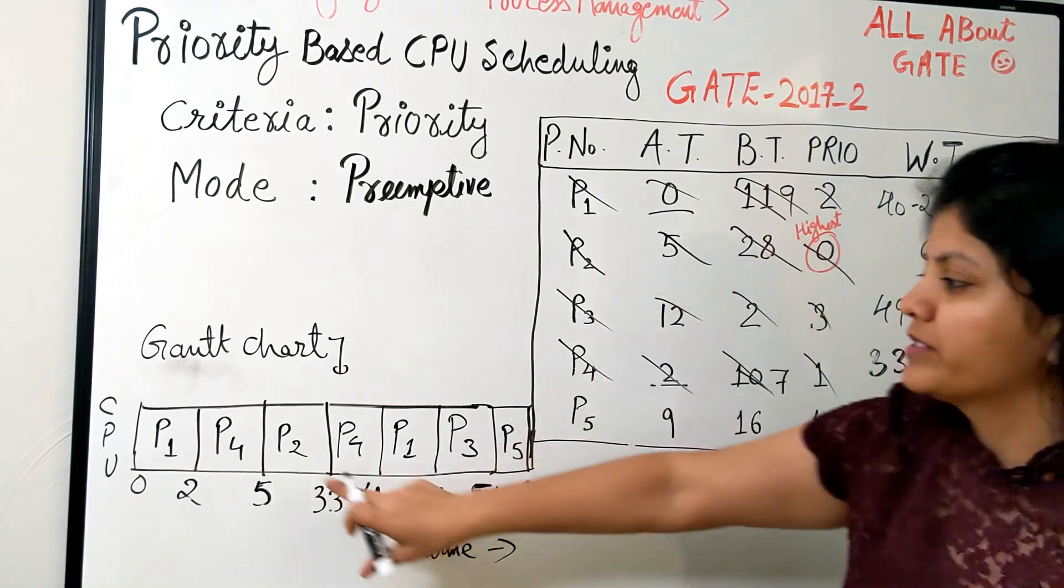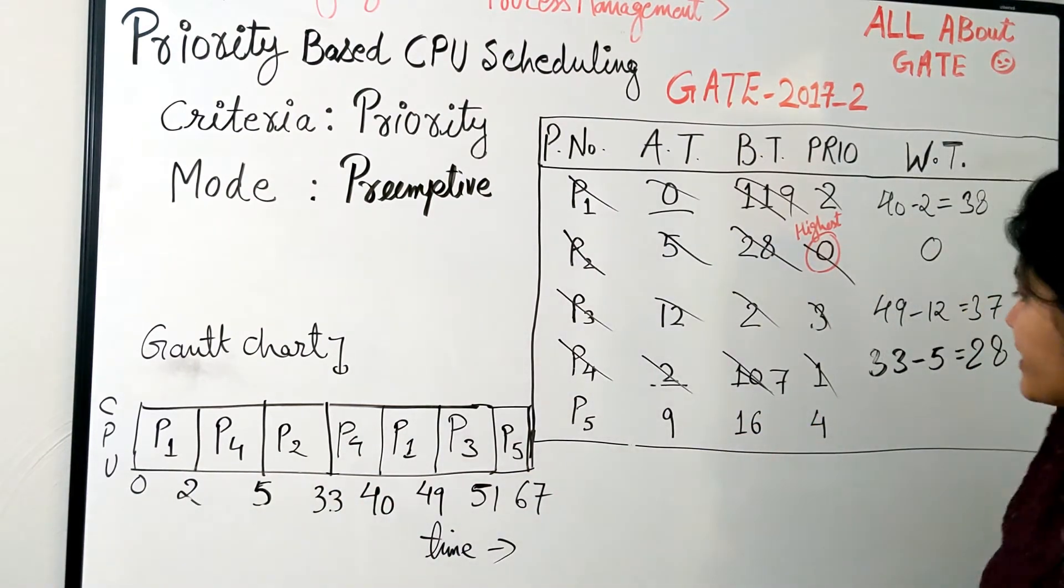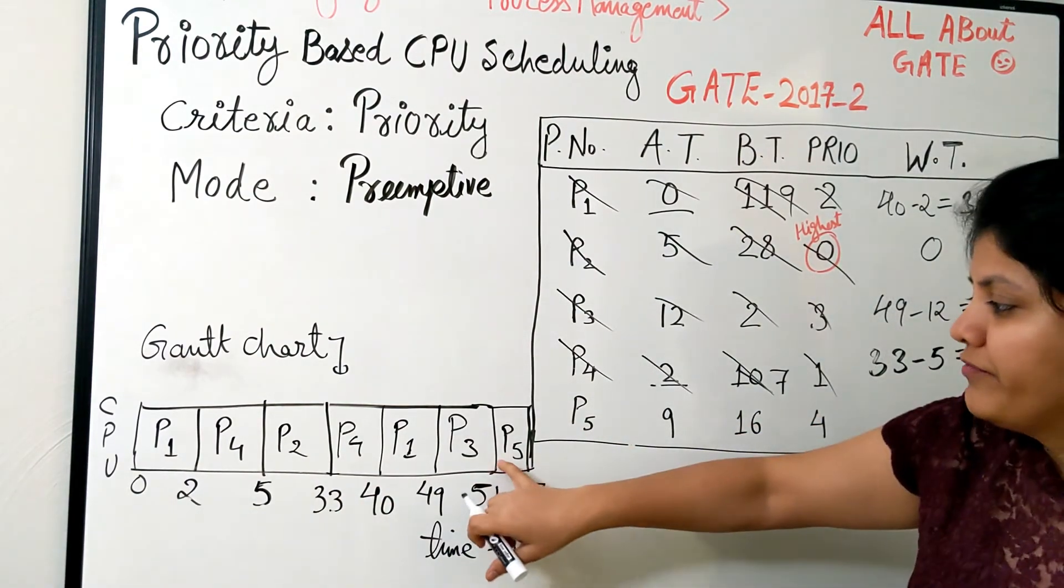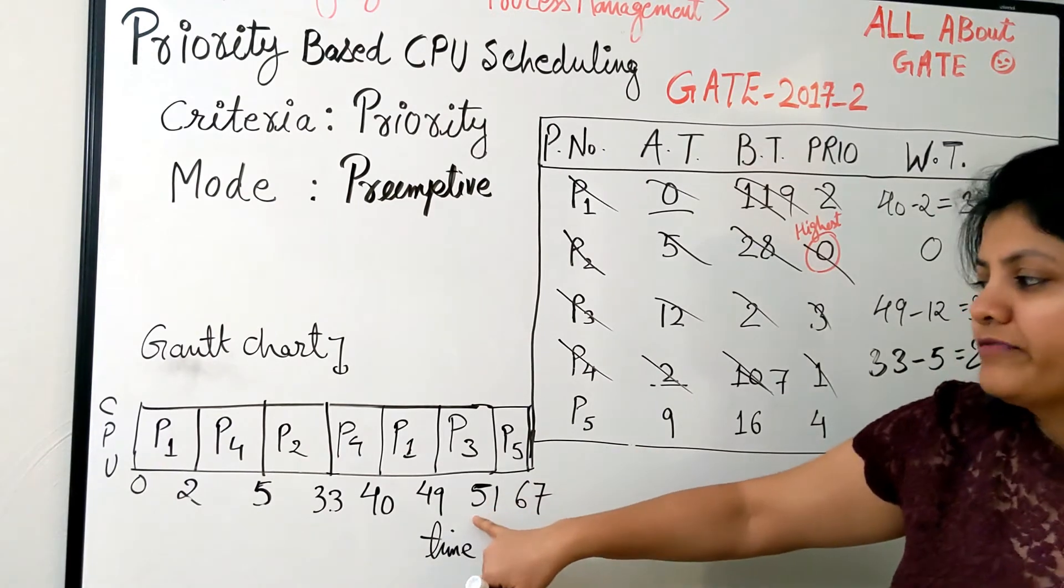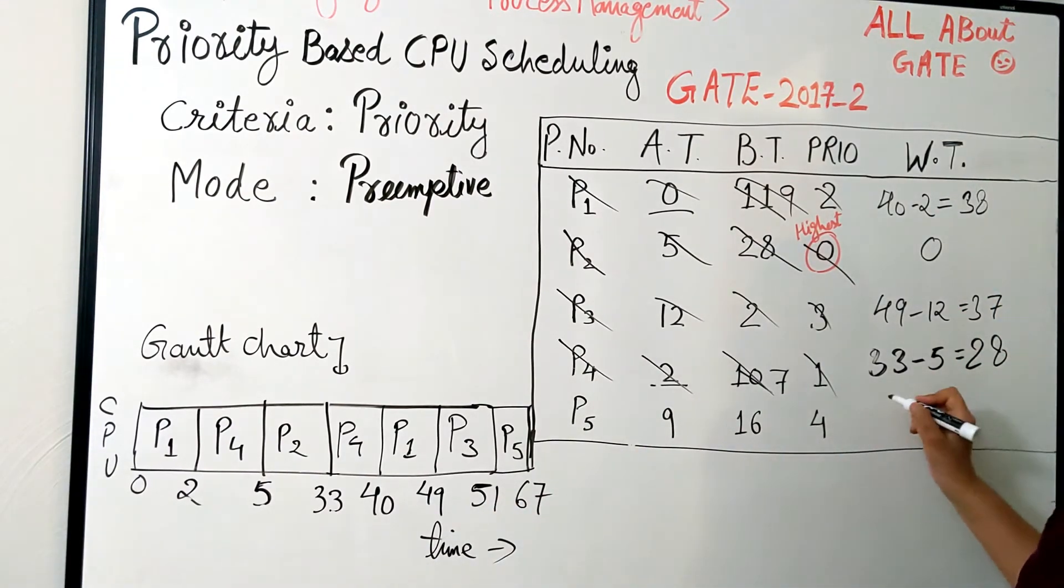Now P5 came at time 9 and it was scheduled at 51, so it becomes 51 minus 9, which is 42.